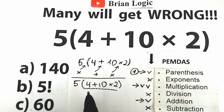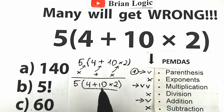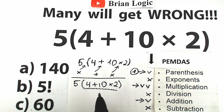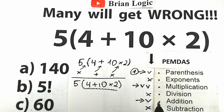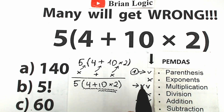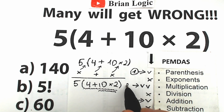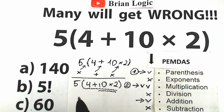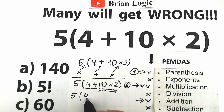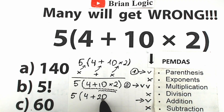But inside parentheses we have a complicated expression with addition and multiplication signs — it's not simply 4 plus 10. So we need to determine what to do first: addition or multiplication. Multiplication has higher priority than addition, so our second step is to multiply 10 times 2. So we have 5, and inside the parentheses: 4 plus 10 times 2 equals 4 plus 20. We have 20.